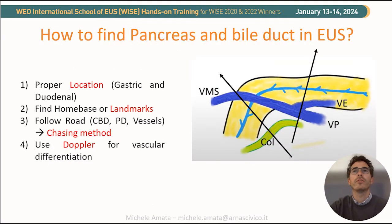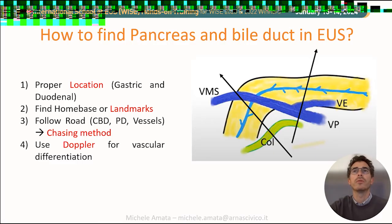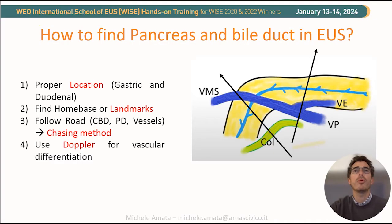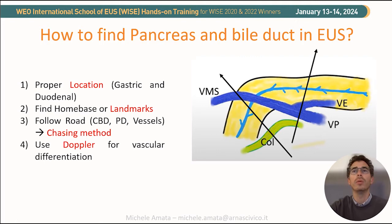First of all, how we find the pancreatobiliary structures. We have to be in the proper location and know the structure that we have to evaluate. We need help from our landmarks by following the structures that we know, and we can also use Doppler for vascular differentiation.